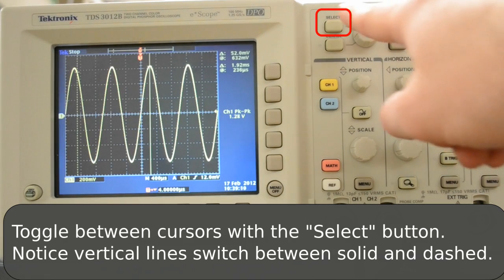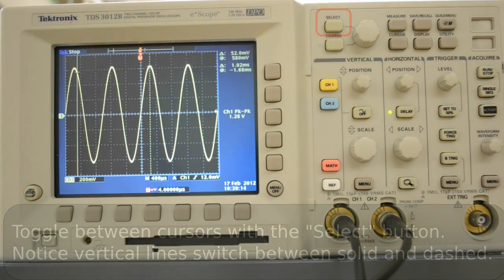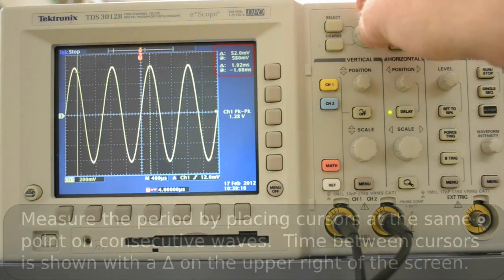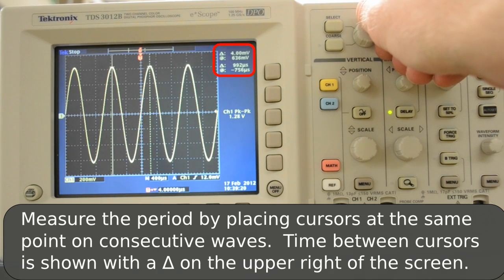To use the other cursor, you hit the select button. Now the two cursor lines have changed, which is dotted and which is solid. I'll adjust the position to the same point on the signal, right at the peak, right there.